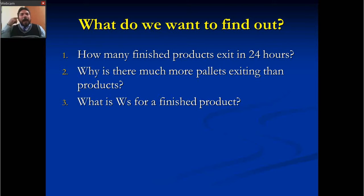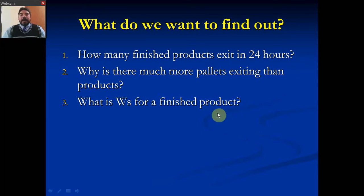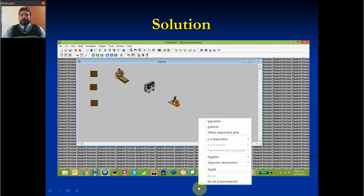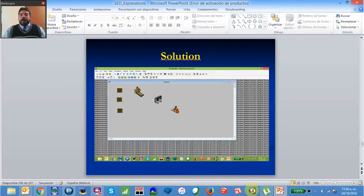What do we want to find out about this process? We can find out how many finished products exit in 24 hours. Another aspect is why there are many more pallets exiting than products. And what is the time in the system for a finished product — how much time do we spend finishing a specific product? We're going to build this layout in ProModel to explain this situation.